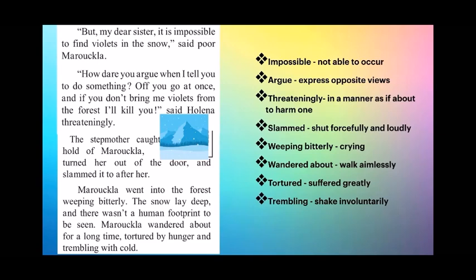In this passage we see that Marukkala tells Holina it is not possible to find violets when it's snowing. Holina forces Marukkala and threatens her that if she does not get violets she will kill her. The stepmother forces Marukkala out into the snow and slams the door behind her. Marukkala goes into the forest crying. The snow was deep and she couldn't find any traces of human footprints. For a very long time Marukkala walked aimlessly, hungry and shivering with cold.